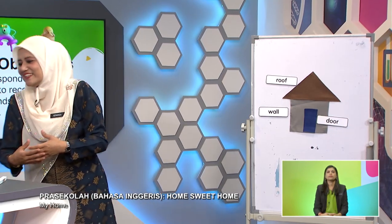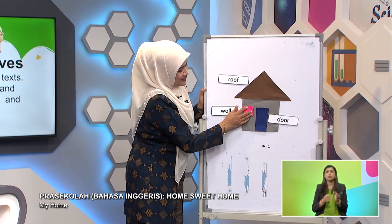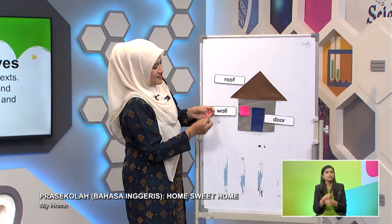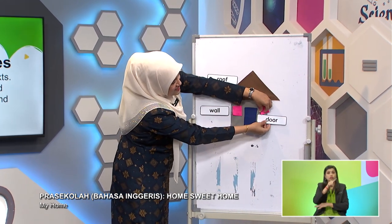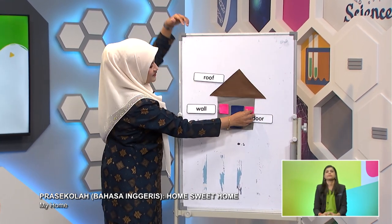Last but not least, we also need a window — for the air to come in and so it won't be very hot in the house. We can have nice natural sunlight coming into the house. What shape is this, Hanif? It looks like a square. Yes, it's a small square for windows.